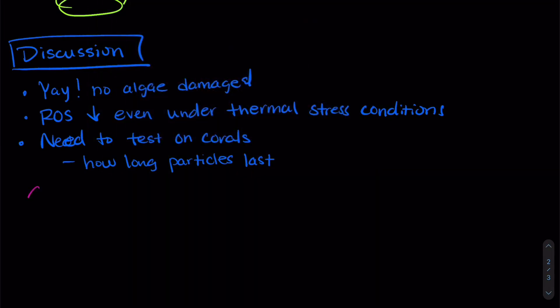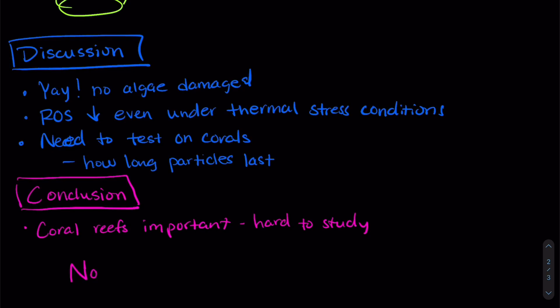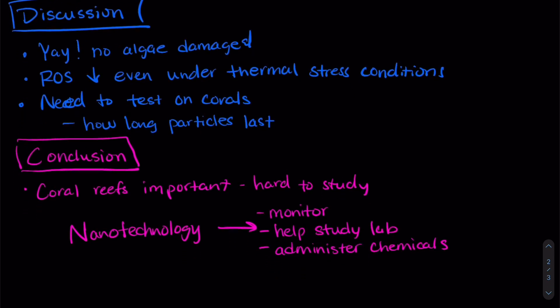What does this all mean in the large grand scale? What can we conclude? Well, the first thing is that coral reefs are really important, but they're hard to study. And we need new ways to study them. And one of those is with nanotechnology. And so some of the things that we can do specifically with coral reefs and nanotechnology is we can use nanotechnology to help monitor coral reefs. We can use it to help us study corals in the lab more easily. We can help them to administer chemicals like we did in this study or vaccines, if there's some kind of virus that the corals are having. And we can also use nanotechnology to manipulate DNA to increase coral resistance to changing conditions.